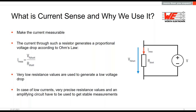When we use a resistor within the circuit of the application, we want to make the current measurable. This resistor is also called a shunt. The current through such a resistor generates a proportional voltage drop according to Ohm's law. Normally very low resistance values are used to generate a really low voltage drop up to a few hundred millivolts. In case of low currents, a very precise resistance value and an amplification circuit have to be used to get stable measurements because of the very small voltage drop. But in the end, it's all related to Ohm's law.